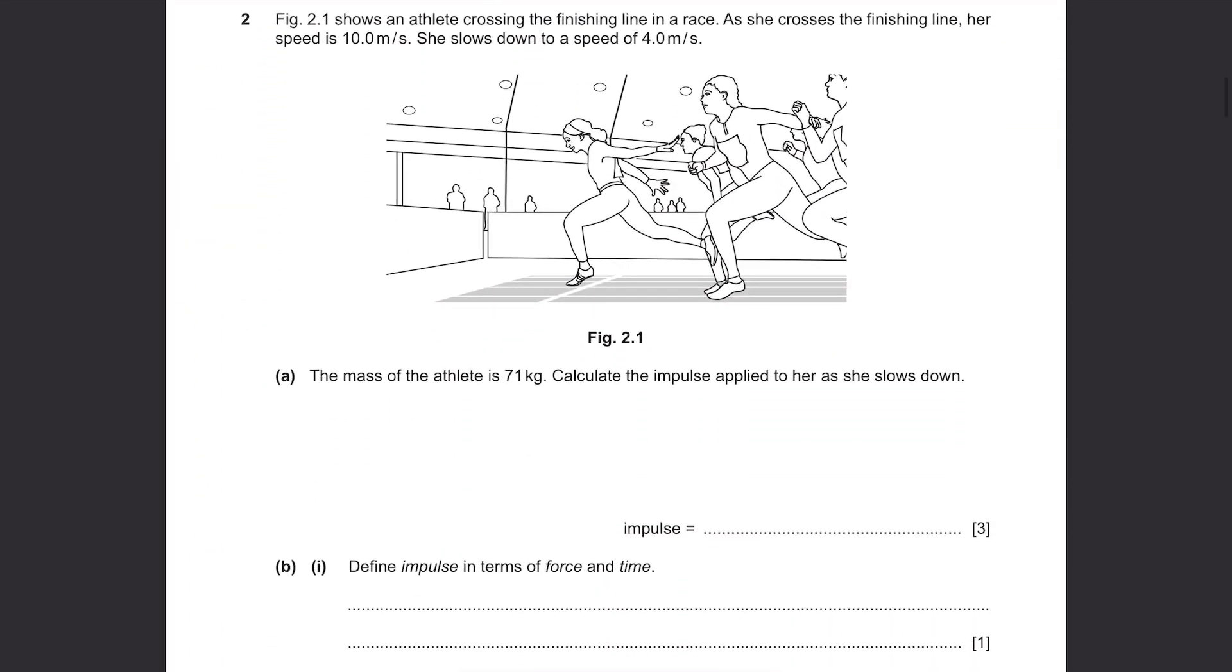Question 2. Figure 2.1 shows an athlete crossing the finishing line in a race. As she crosses the finishing line, her speed is 10 meters per second. She slows down to a speed of 4 meters per second. Part A. The mass of the athlete is 71 kilograms. Calculate the impulse applied to her as she slows down.